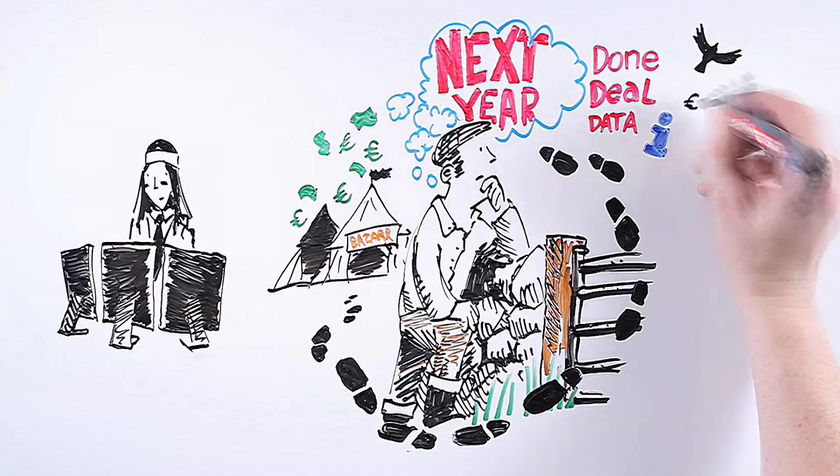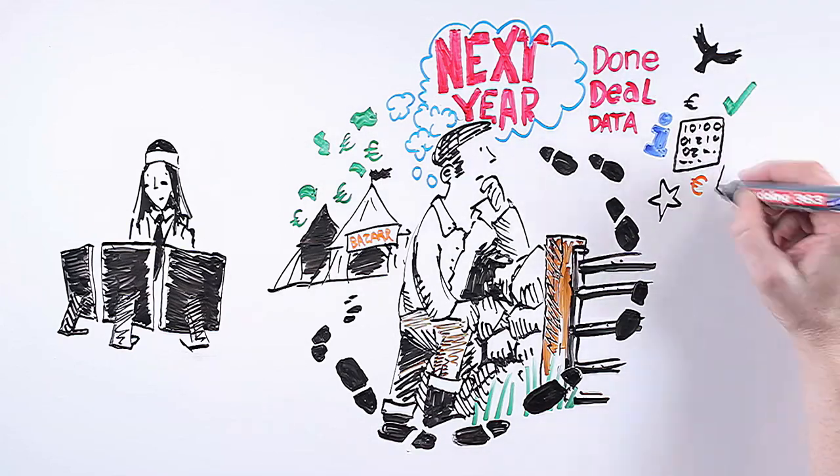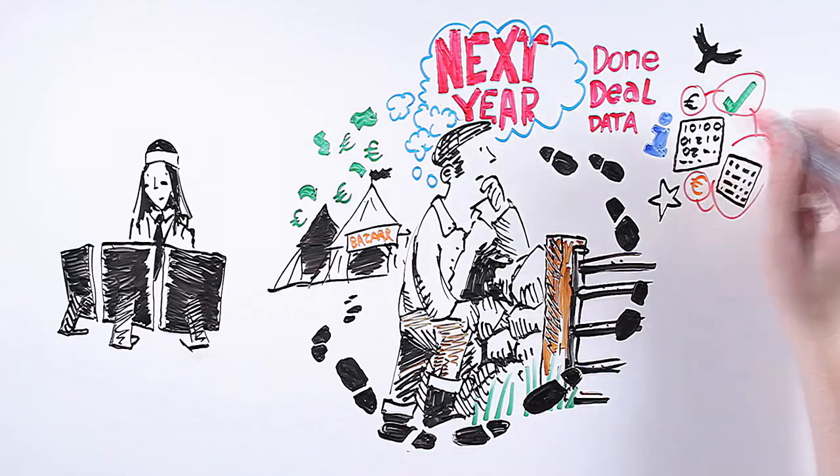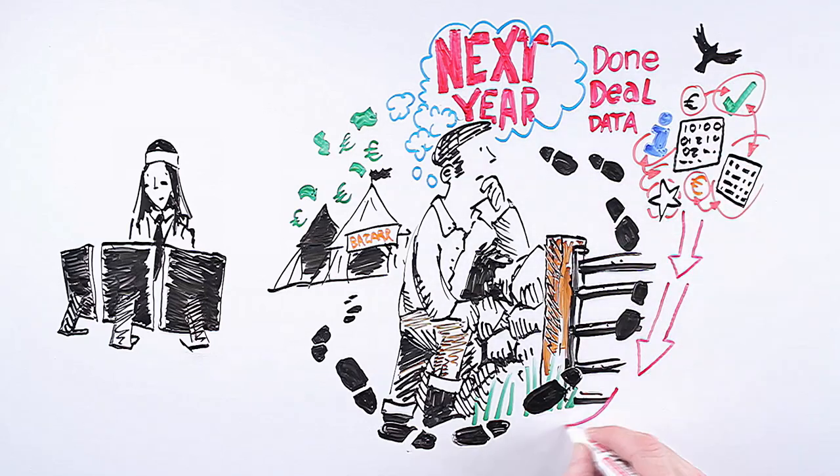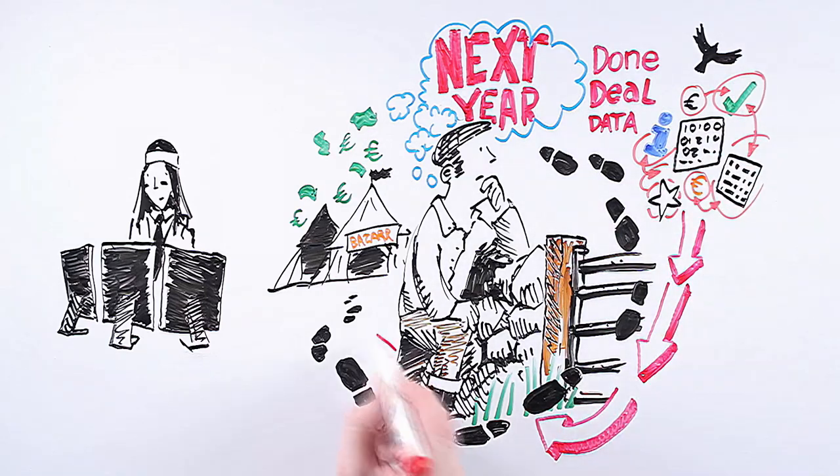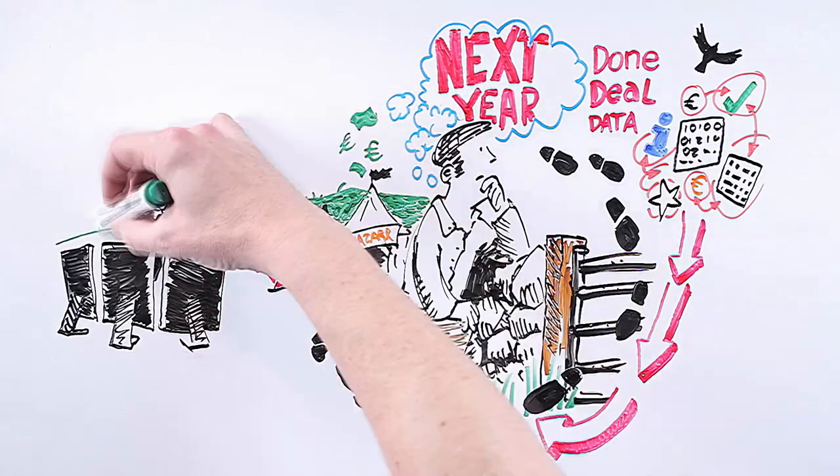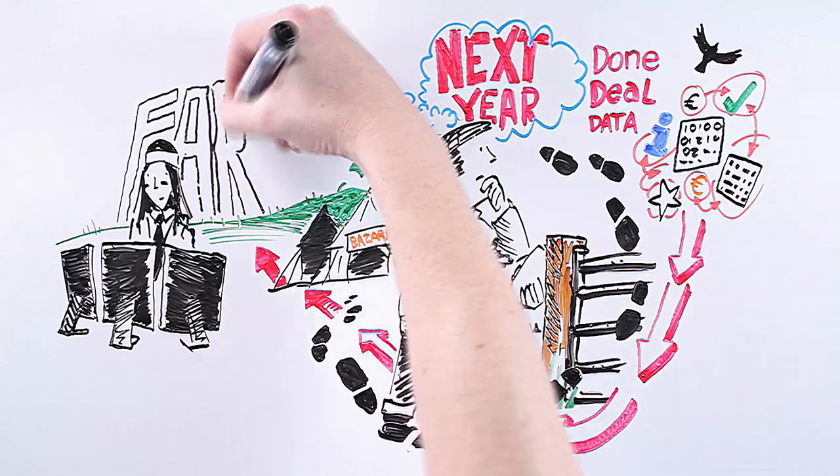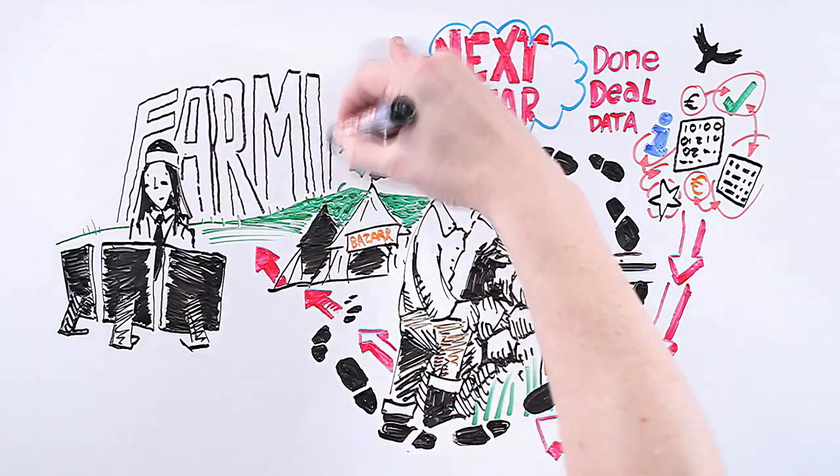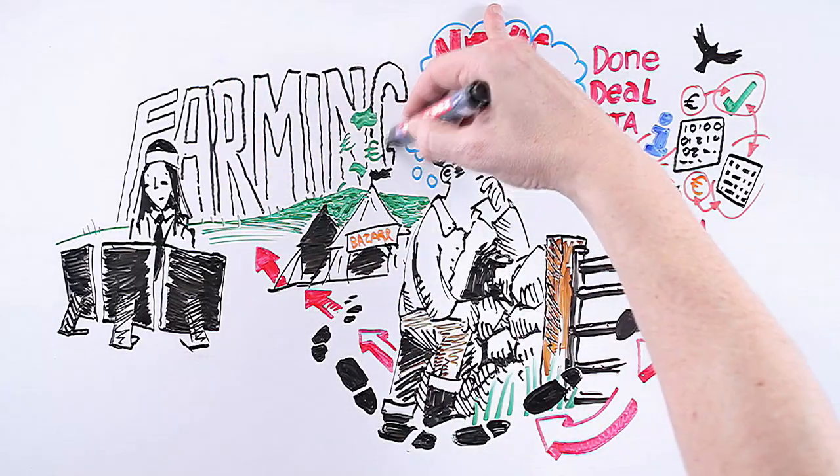Dundeal data allows us to be the Lord Baltimores of today, tracking signs that are invisible to others, assessing patterns in the data, joining up the dots and seeing into the future, and knowing what the farmer is likely to do even before he does, and understanding where Ireland's biggest industry is going well before it gets there.